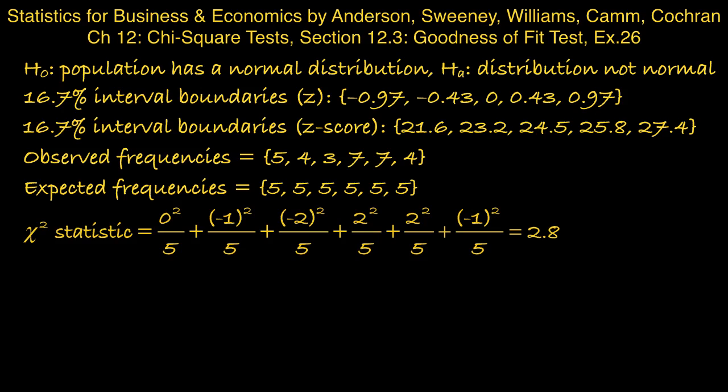We have 5 degrees of freedom in this case because we have 6 intervals. If we look up the chi-squared table along the row for degrees of freedom equal to 5, there is a critical value 9.236 that corresponds to a tail area of 0.1, so the tail area corresponding to 2.8 will be larger than 0.1.